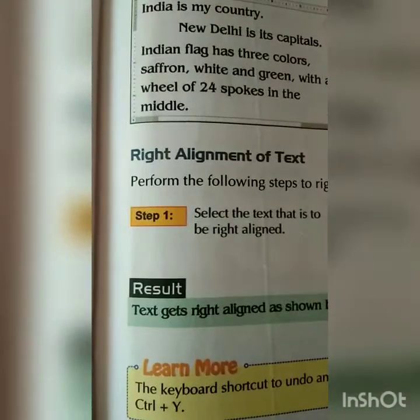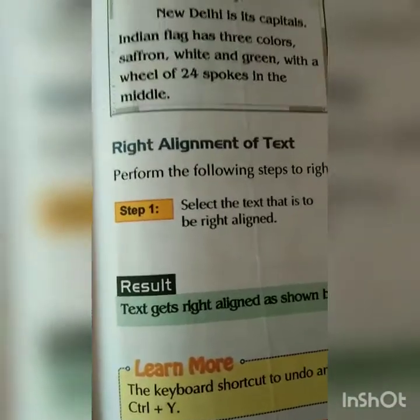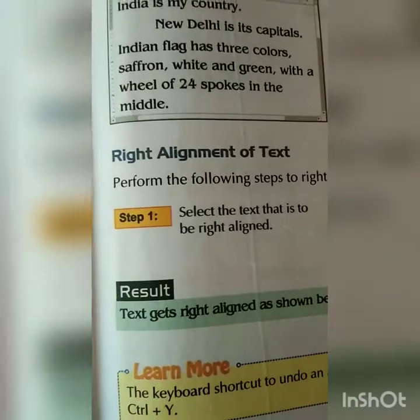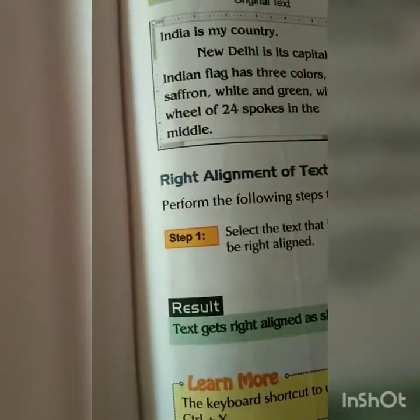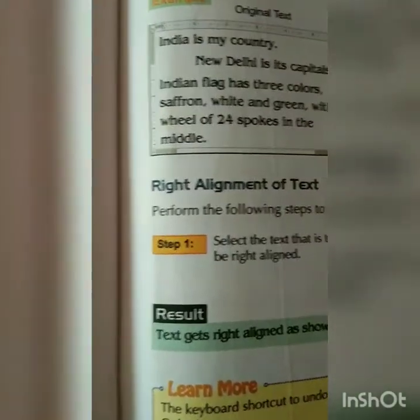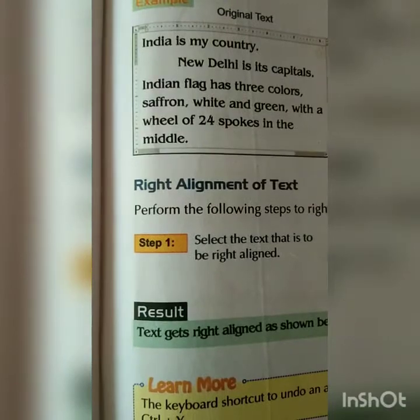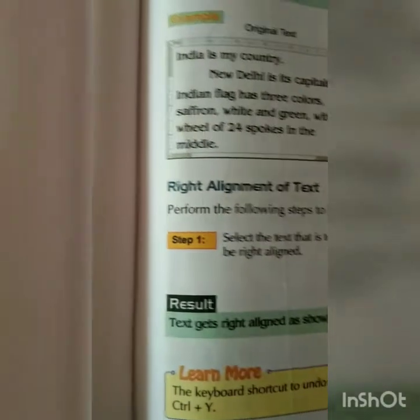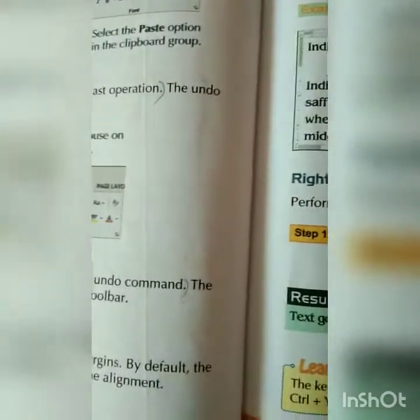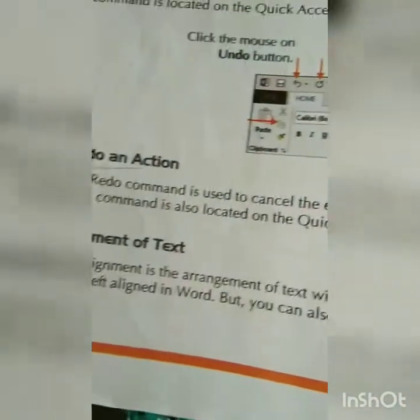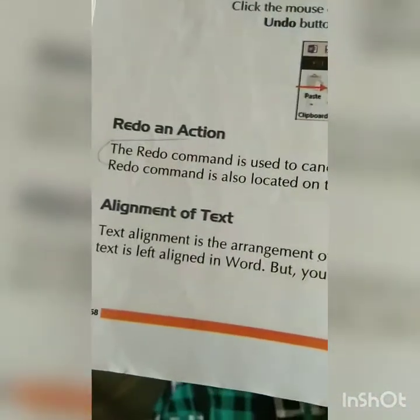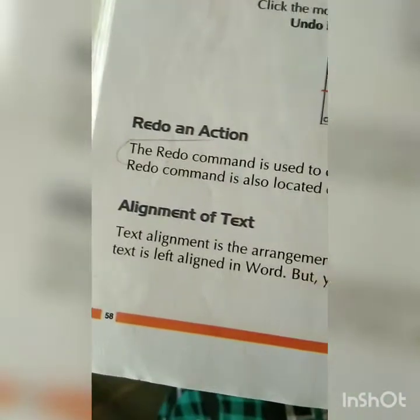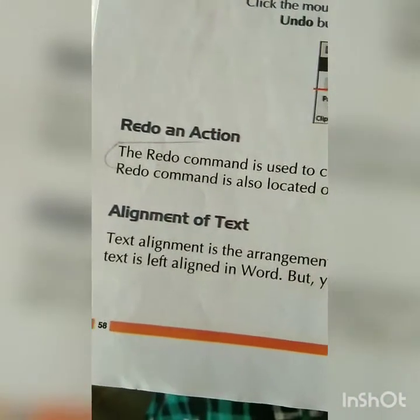Hey students, how are you all? Hope you all are happy. So, let's start today our computer period lecture. Today we are going to start lesson number 5 MS Word and we are going to continue today part 3 of it. Today we are going to see alignment of text. Here is the alignment of text and we will go through what is the alignment of text.